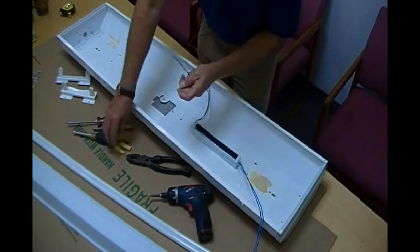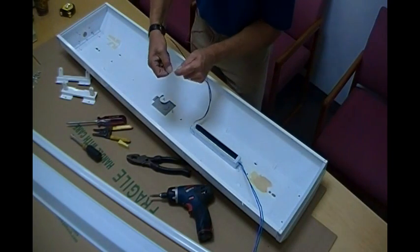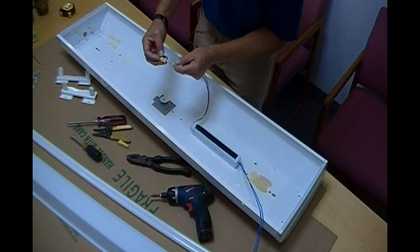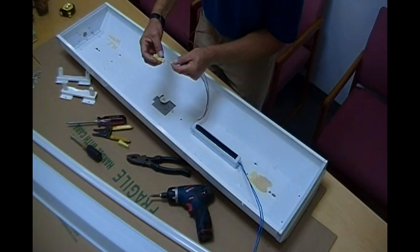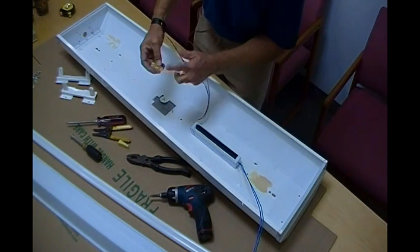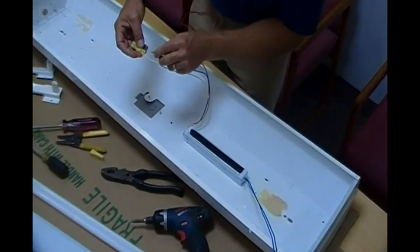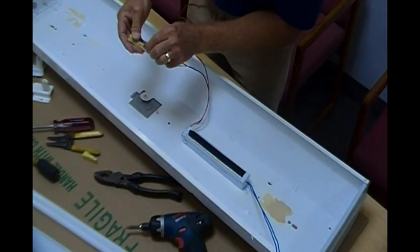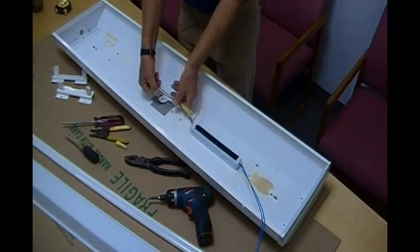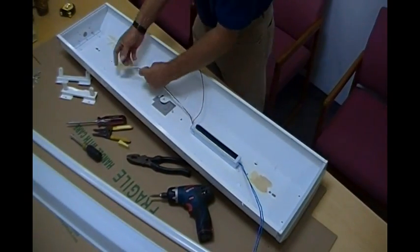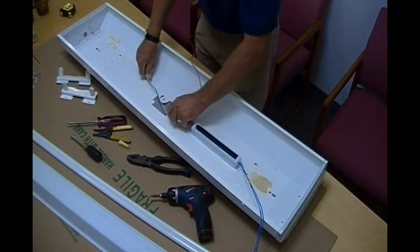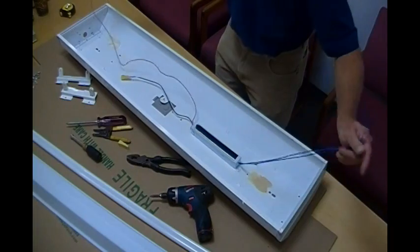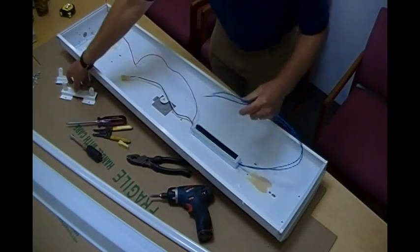Be sure to attach your certified required ballast disconnect for 347 volts. It's required on any installation above 150 volts and that will be attached to your power feed when you finalize putting on your socket plates for the T5.